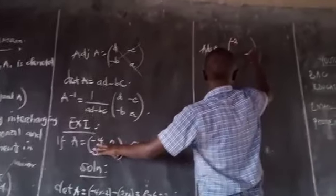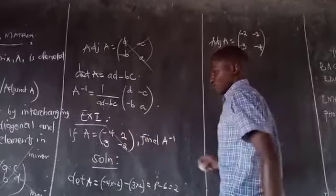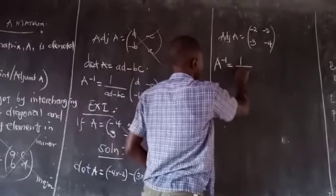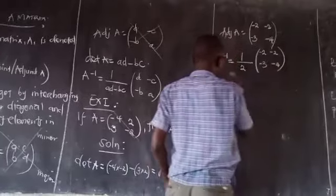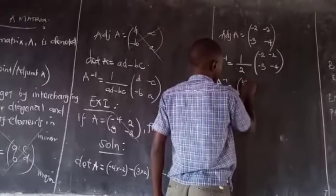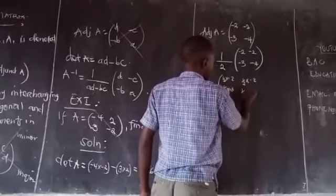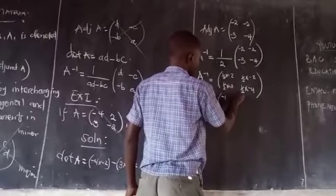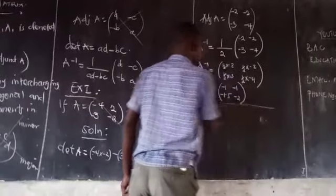Now, what is the adjoint of A? By interchanging these elements, meaning that negative 2 will go up and negative 4 down, then the signs of the minor diagonal elements change: b becomes negative 3, and c becomes negative 2. From there, A inverse equals 1 over the determinant — which is 2 — times the adjoint [negative 2, negative 2, negative 3, negative 4]. That gives us one-half times the matrix, which equals [negative 1, negative 1, negative 1.5, negative 2]. That is the inverse of A.